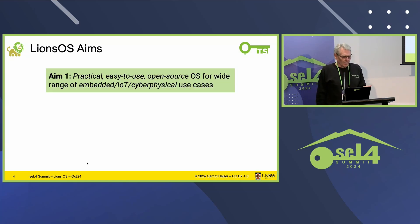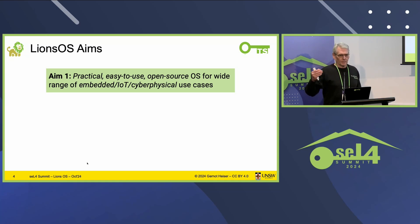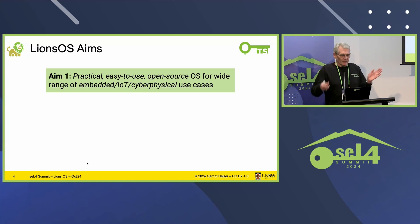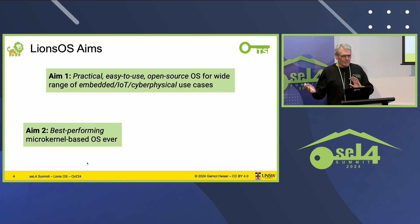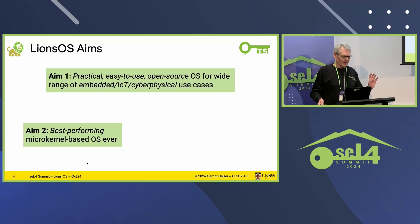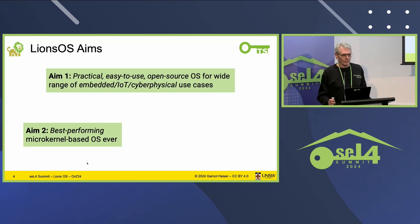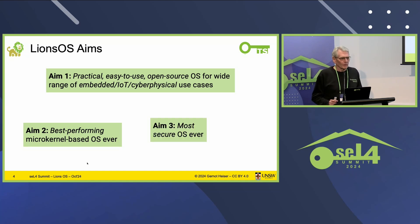The first aim addresses the main points I mentioned: a practical, easy-to-use, open-source OS covering the embedded system space, but not beyond — embedded, cyber-physical, IoT — targeting that domain and not more. Second: best performing microkernel-based OS ever. This is actually a low bar, honestly. Benchmarks from papers, commercial evaluations — they all tell me other systems are at least a factor of 10 slower than what we can do in Lions OS. And the third aim, of course: it's secure. I really want it to be the most secure operating system ever.